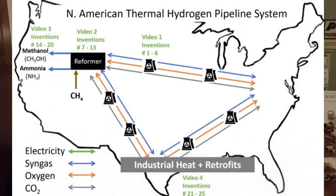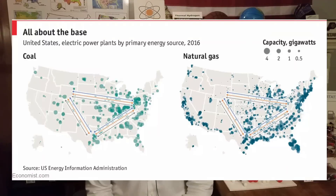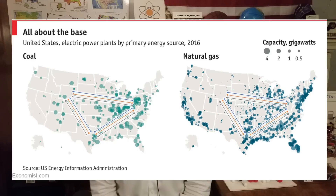In video four, I show how we could use these three pipelines to make industrial heat emissions-free including retrofits. We can retrofit an existing fossil fuel system to make it emissions-free without carbon capture using molten carbonate fuel cells, fueled by syngas from thermal hydrogen. That's how we can make industrial heat and retrofits emissions-free without carbon capture.